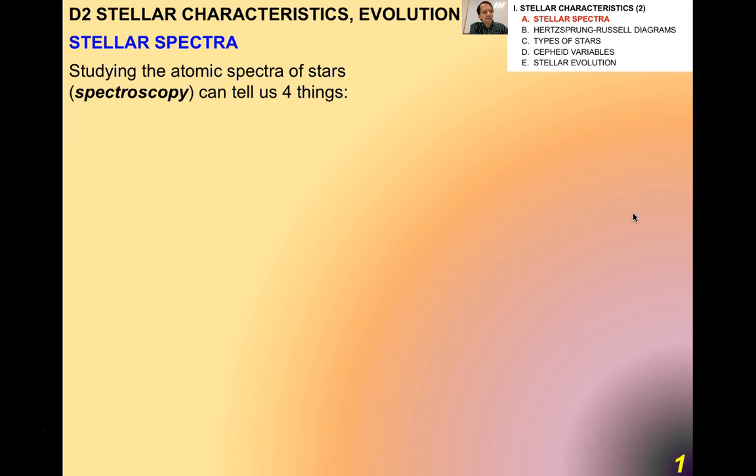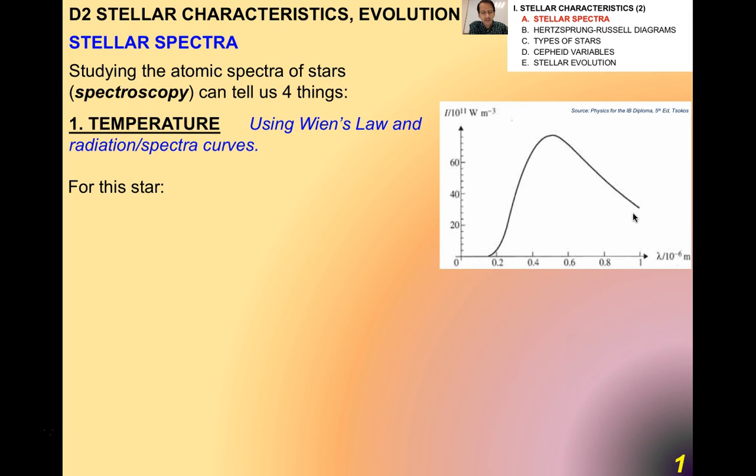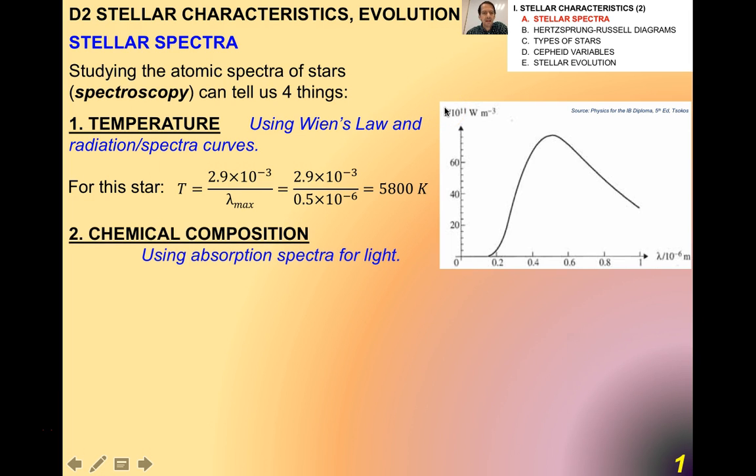The first thing I want to talk about is kind of a throwback to something we've talked about before, especially in topics 7 and 12, when we talked about atomic spectra. Now it turns out that by studying the atomic spectra of stars, which is called spectroscopy, it's a tough word to say, you can tell us four things about stars. The first thing, which is very important, is the temperature of a star. We can use the intensity against wavelength graph using Wien's law and the radiation spectra curves. And remember that this equation right here is given to you in your data booklet, actually under topic D2. This is Wien's law relating the maximum wavelength to the temperature. And of course, for this particular star, which is our sun, you get that it's a temperature of about 5,800 Kelvin, about 6,000 Kelvin. So you need to be able to do these kinds of problems on the IB exam.